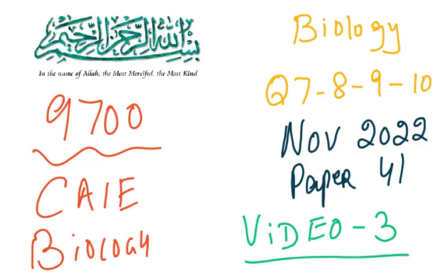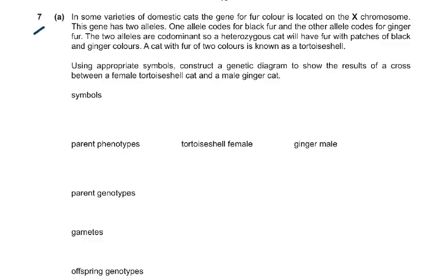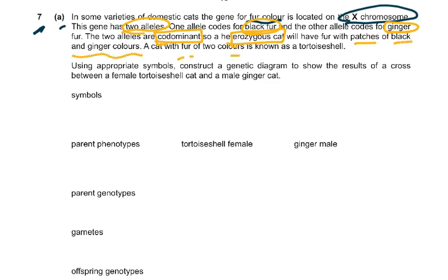Bismillahirrahmanirrahim. Another video for the November 22 Paper 4. Coming to question number 7a: in some varieties of domestic cats, the gene for fur color is located on the X chromosome. This gene has two alleles — one allele codes for black fur and the other codes for ginger fur. The two alleles are co-dominant, so a heterozygous cat will have patches of black and ginger colors, known as tortoiseshell.